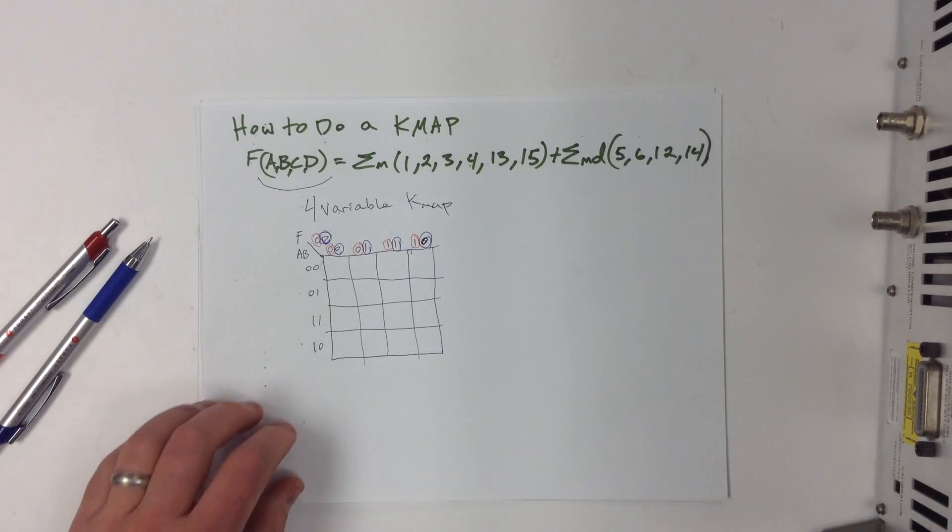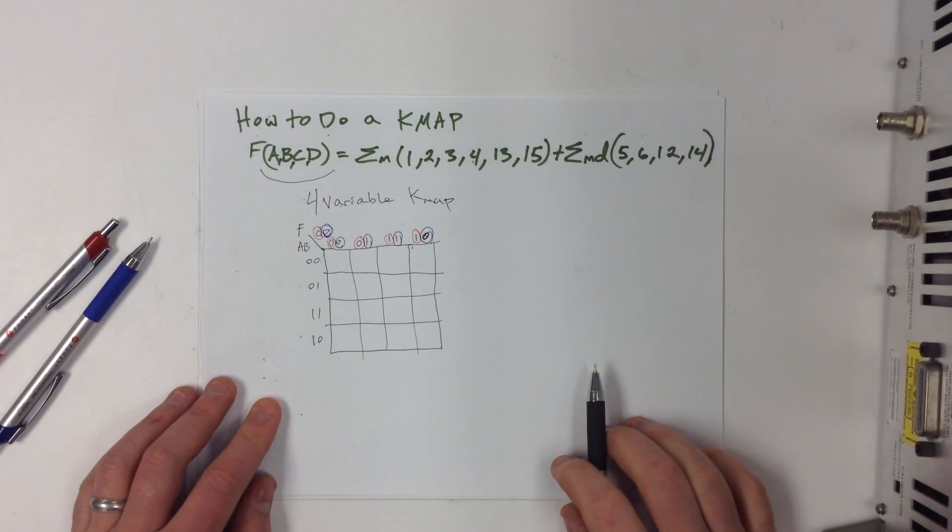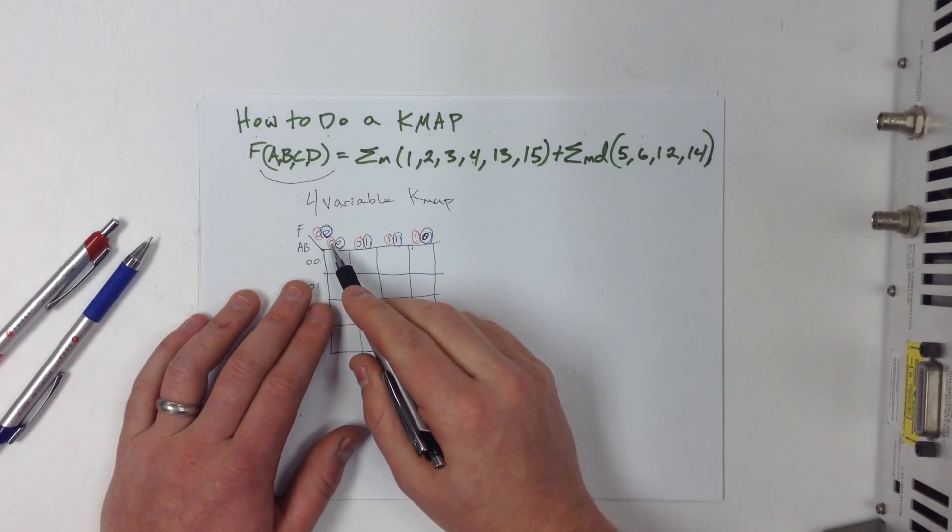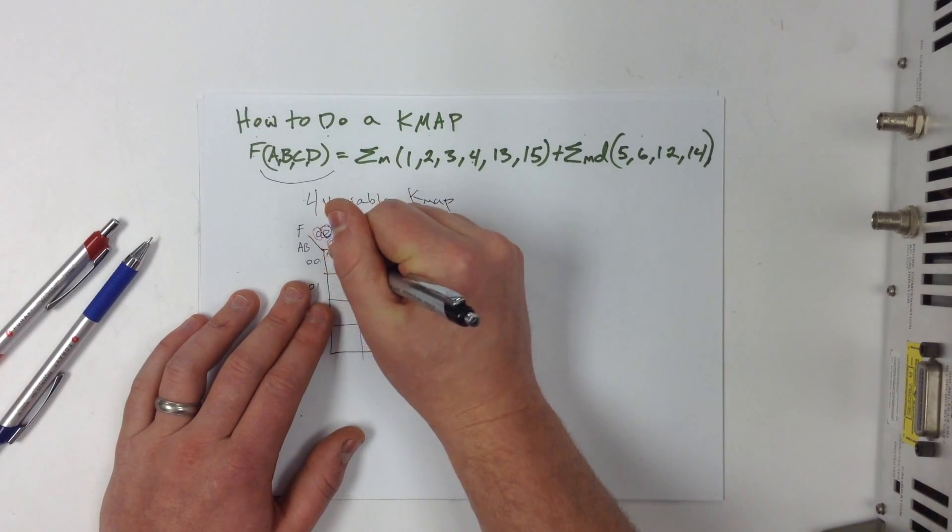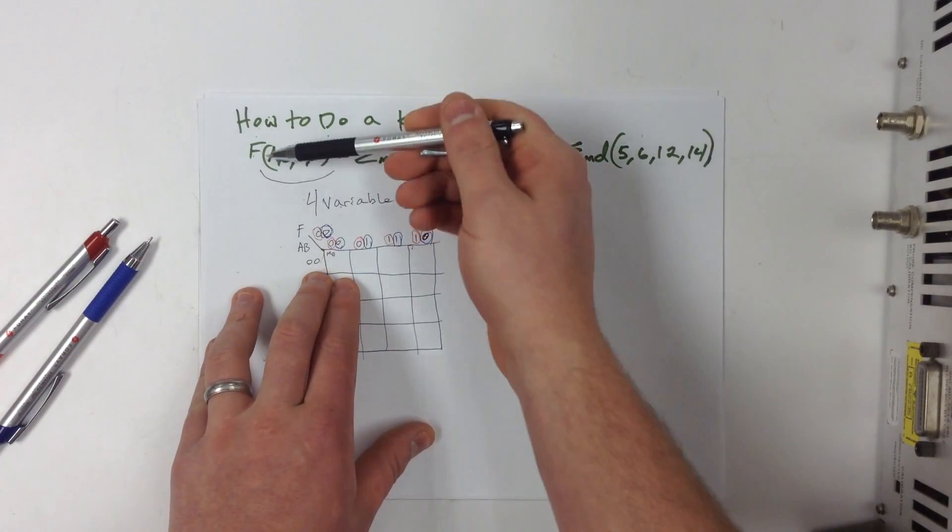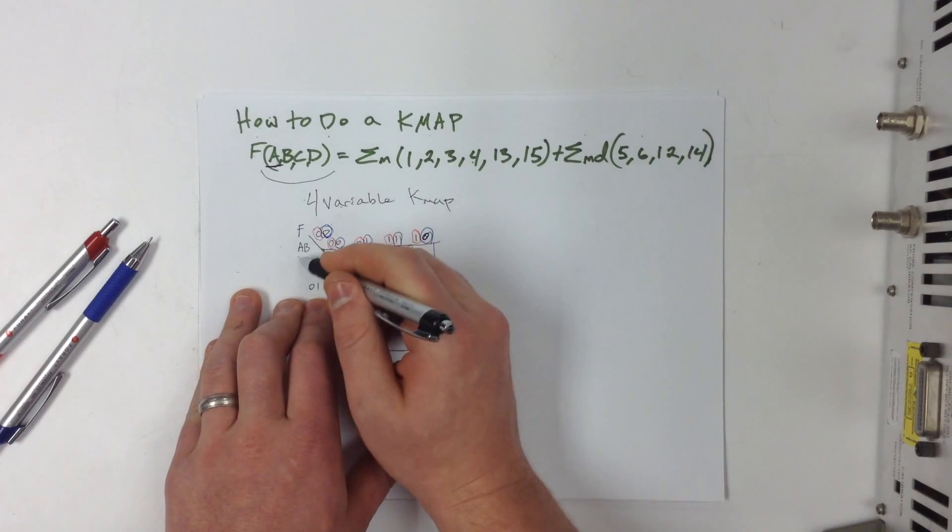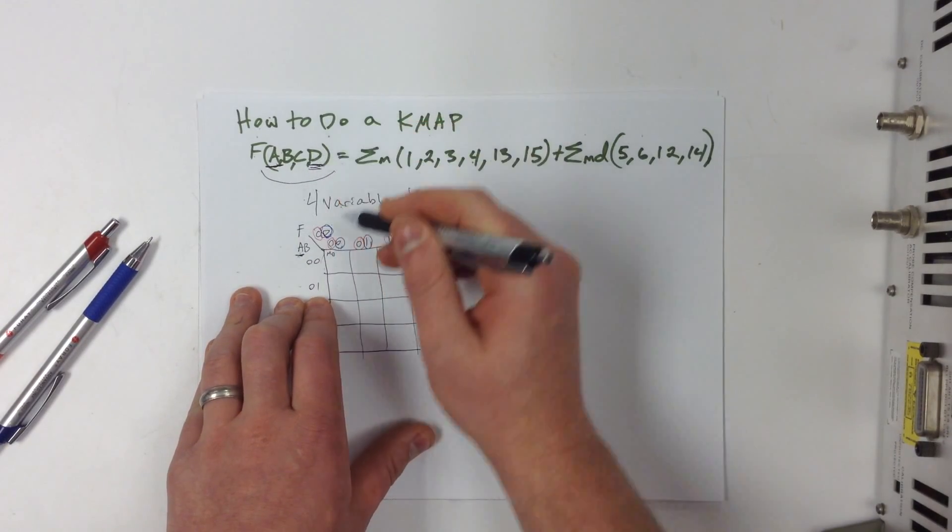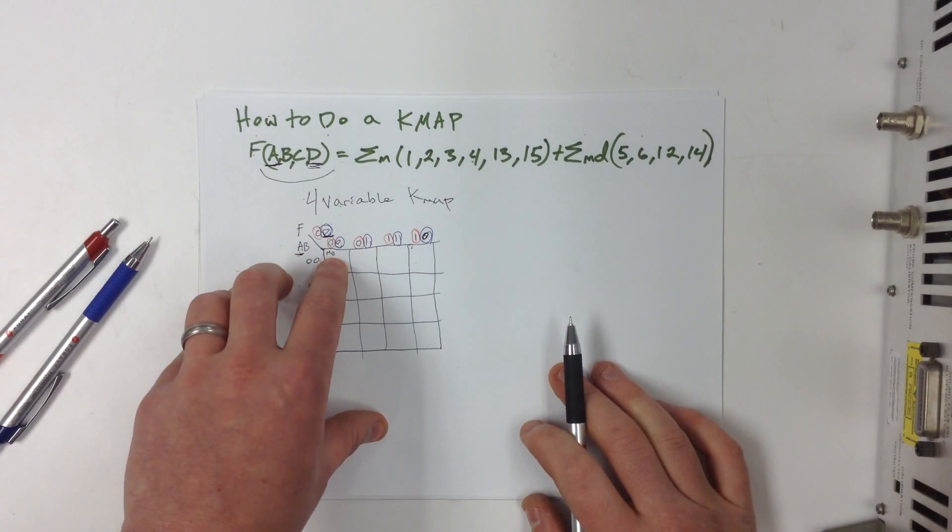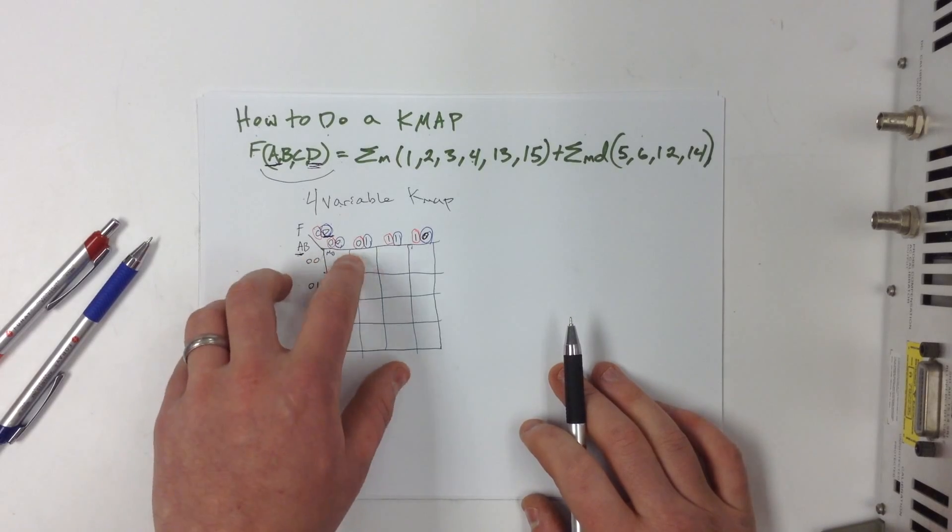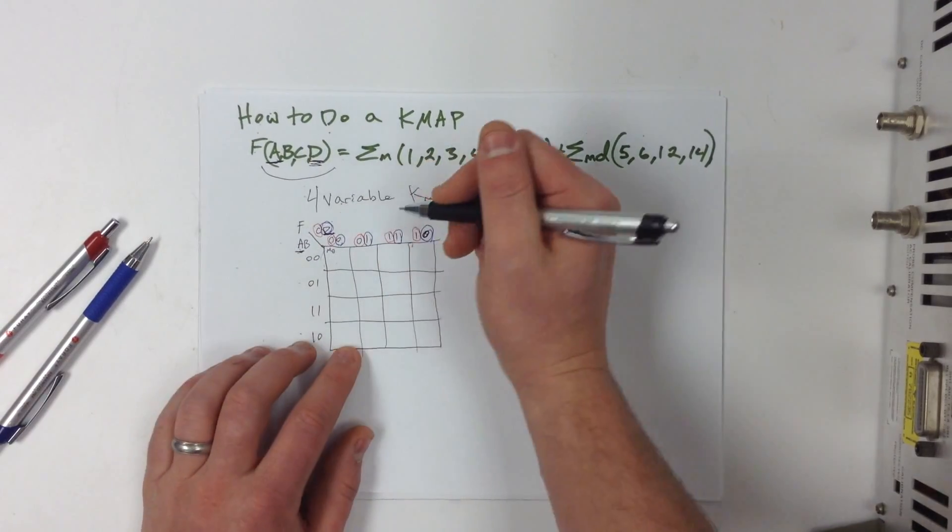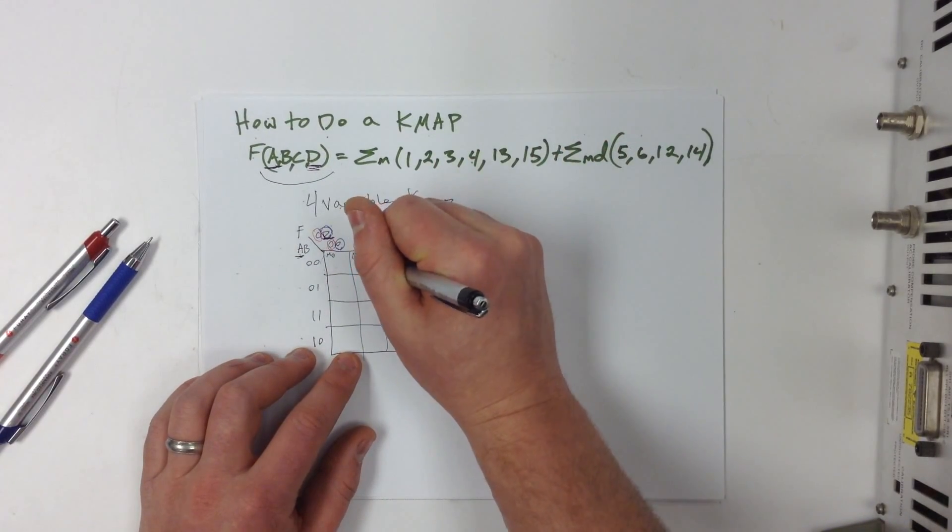So let's go ahead and start numbering these minterms. Now, minterms can be a little confusing. So what I want to do is I want to kind of start out and say the binary number 0, 0, 0, 0 equals minterm 0, right? So if we look at this, the binary representation, most significant bit right here, least significant bit right here. We can say 0, 0, 0, 0 equals minterm 0. So similarly, we can go to the column next to it and say 0, 0, 0, 1 equals the binary number 1. So we can say this is minterm 1.